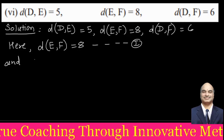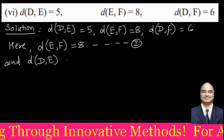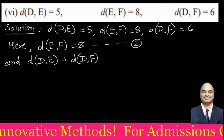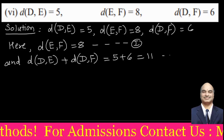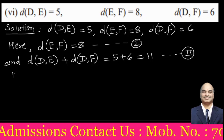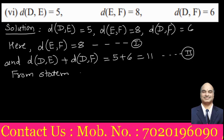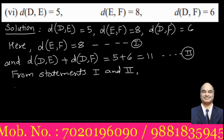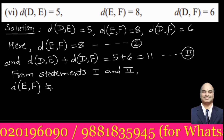The other two distances, DE and DF, add up to 5 plus 6 which equals 11 — this is statement 2. From statements 1 and 2, the greater distance EF is not equal to the sum of the other two distances DE and DF.